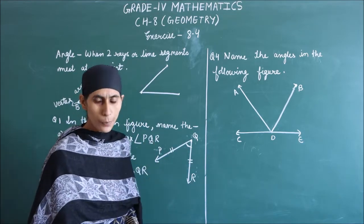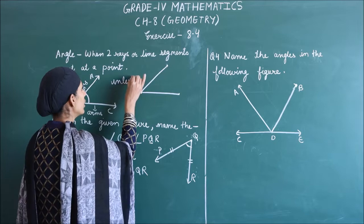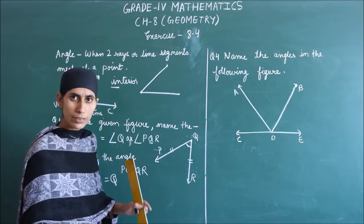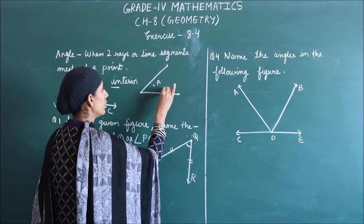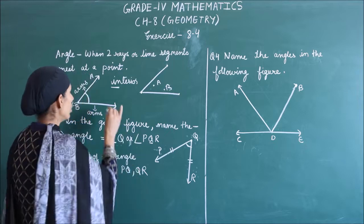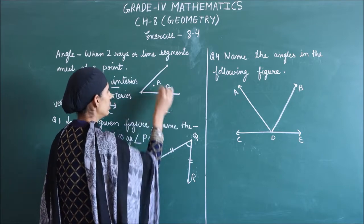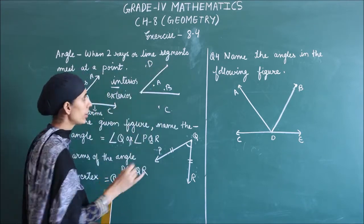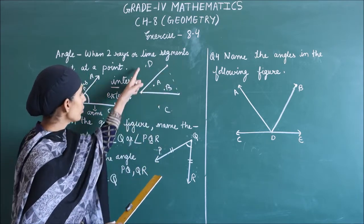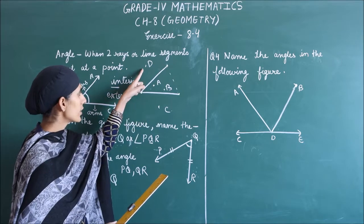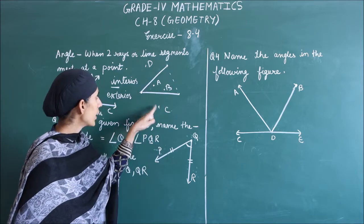We have interior and exterior points. Interior, see the name, we have to understand. Interior means inside, so the points inside the angle are interior points. And exterior means the points outside, like C and D. These points are your exterior points. Question 2, you can see and check and write.